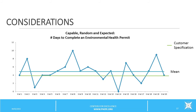Here is a run chart that indicates where a QI project could be helpful. This graph represents the number of days it takes staff to completely process an environmental health permit — specifically on-site sewer applications. The green line represents the customer specification: completing the application within four days meets customer needs. The mean is about five days, so though the process is capable of meeting customers' needs, it is not consistently doing so. This would be a good candidate for a quality improvement project aimed at reducing the average to under four days.